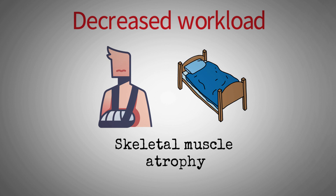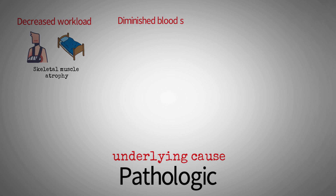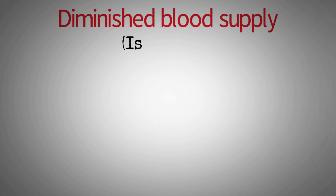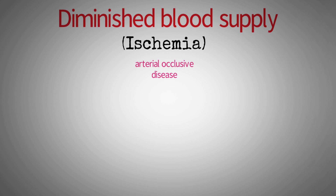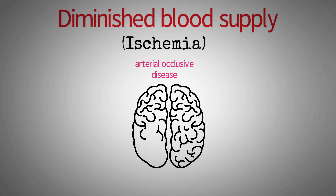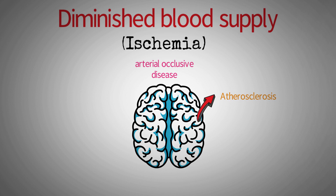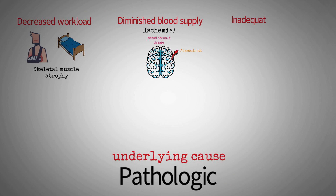The initial rapid decrease in cell size is reversible once activity is resumed. Diminished blood supply: a decrease in blood supply (ischemia) to a tissue as a result of arterial occlusive disease results in atrophy of tissue owing to progressive cell loss. In late adult life, the brain undergoes progressive atrophy, presumably as atherosclerosis narrows its blood supply.